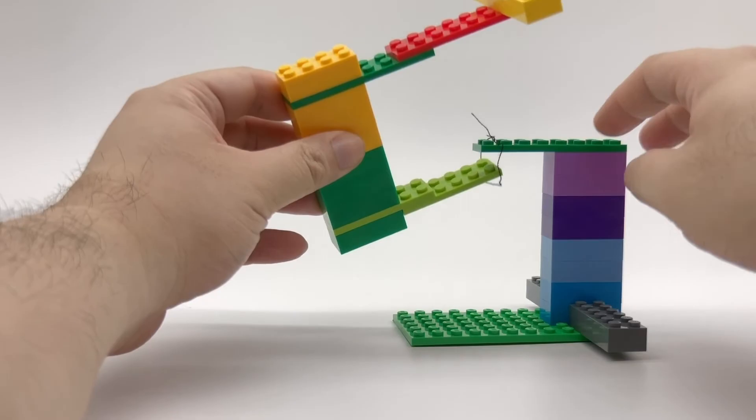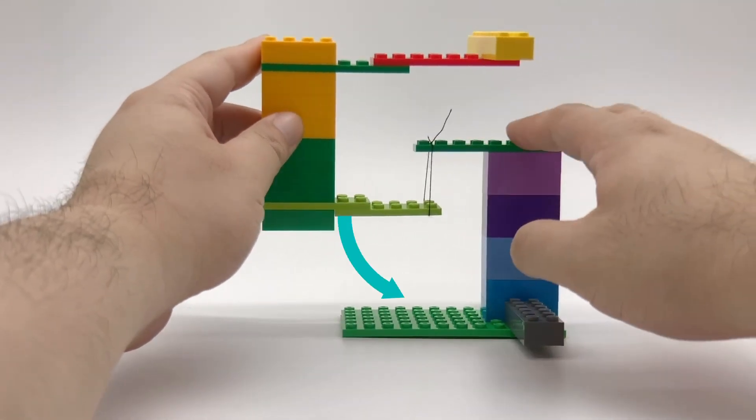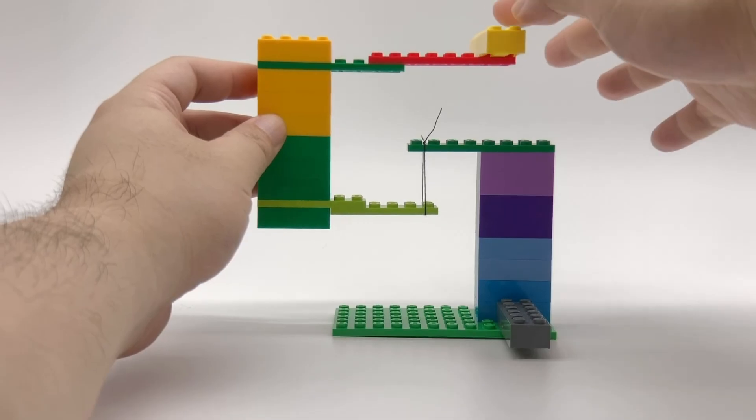But if we can apply an equal amount of force going in the opposite direction, we can create equilibrium. You can see what it would look like if you lightly press down on this yellow part.